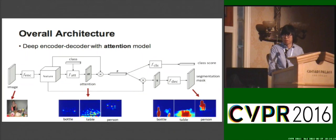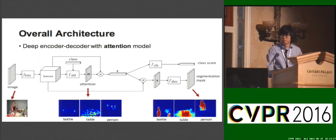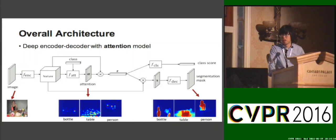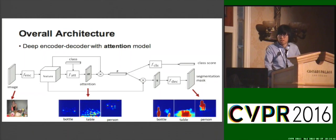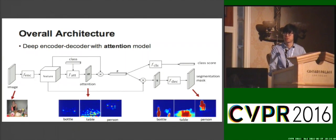To transfer the knowledge from one category to another, we developed a deep encoder-decoder architecture with attention mechanisms. The network is composed of four parts: the encoder, attention model, classifier, and decoder. The attention model takes features extracted from the encoder and produces adaptive spatial saliency of each semantic category present in the image. The output of the attention model is then fed into the decoder, which produces the binary segmentation of each focused region.